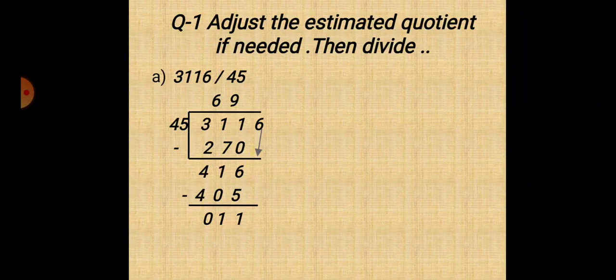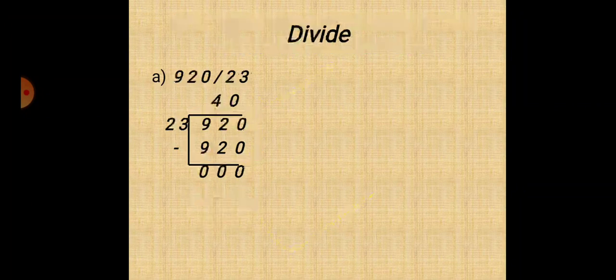Now, 45 times 9 are 405. 416 minus 405 equals 11. So our quotient will be 69 and remainder will be 11. Rest of all sums, you have to do it by yourself in fair book.